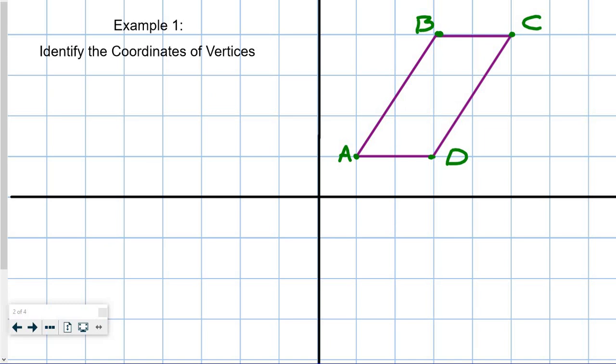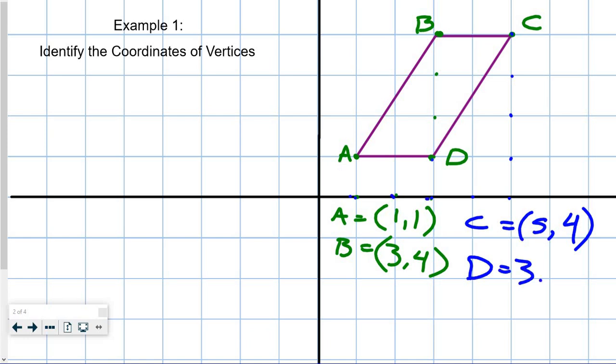Now, that's not enough, we have to actually label them. So we know that this is 1 and 1, so A equals 1 and 1. B equals 1, 2, 3, 1, 2, 3, 4. So 3 and 4. C equals 1, 2, 3, 4, 5. And 1, 2, 3, 4. So 5 and 4. And D equals 1, 2, 3. 1, 3. And 1.